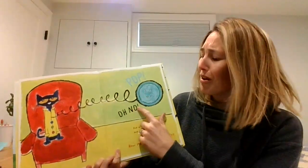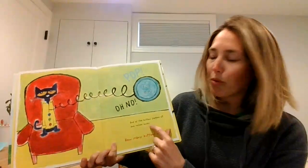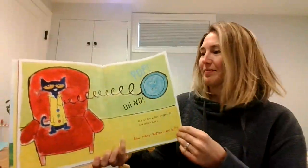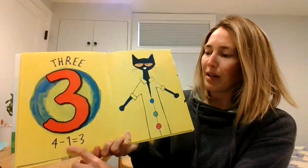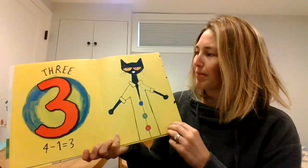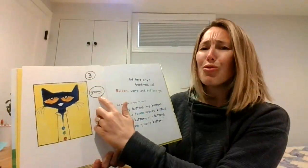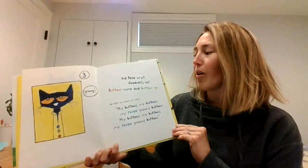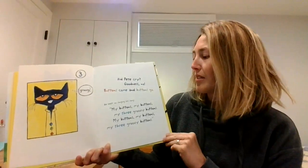Oh no. One of the buttons popped off and rolled away. How many buttons are left? Three. Four minus one equals three. Did Pete cry? Did Pete cry? Goodness, no. Buttons come and buttons go. He kept on singing his song.